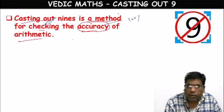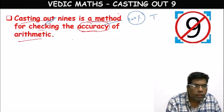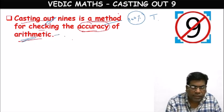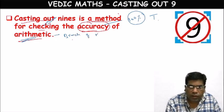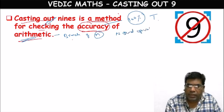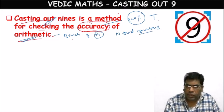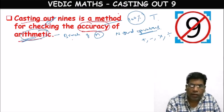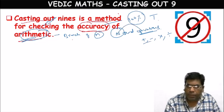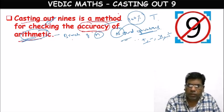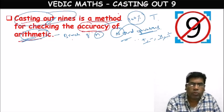The word accuracy means whether the given problem is 100% true or correct or not. Arithmetic is a branch of mathematics involving numbers and operations related to numbers. The basic operations are addition, subtraction, multiplication, and division. When numbers are combined with these operations, to check whether the problem is correct or not, we will make use of this Casting Out Nines technique.